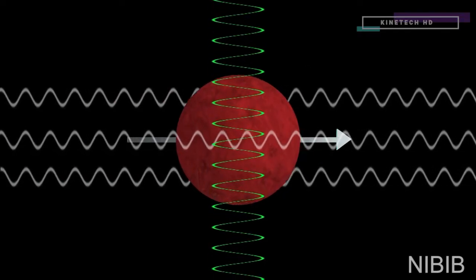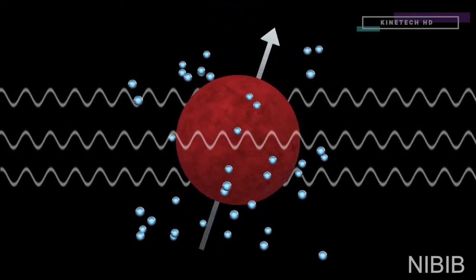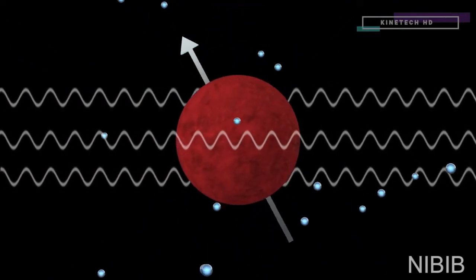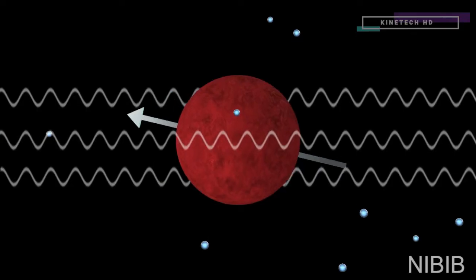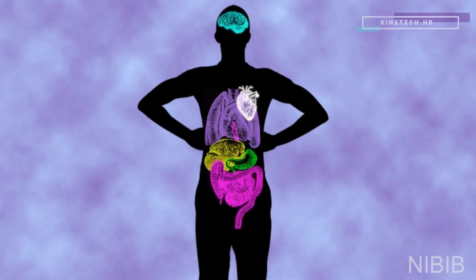Since the radio frequency pulse pushes the proton against its nature, once this pulse is turned off, the protons realign with that magnetic field, releasing electromagnetic energy along the way. The MRI is able to detect this energy and is able to differentiate various tissues based on how quickly they release energy after the pulse is turned off.